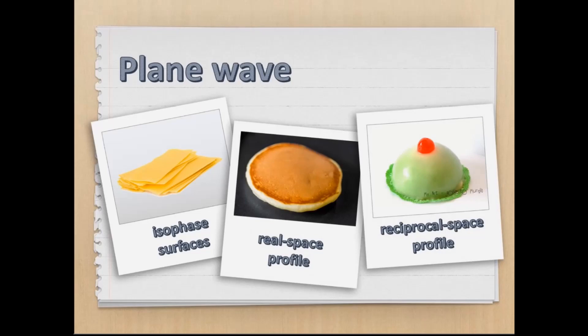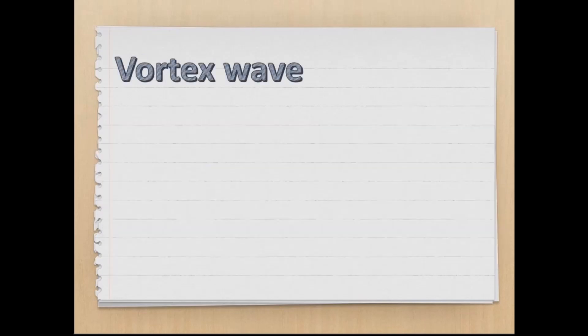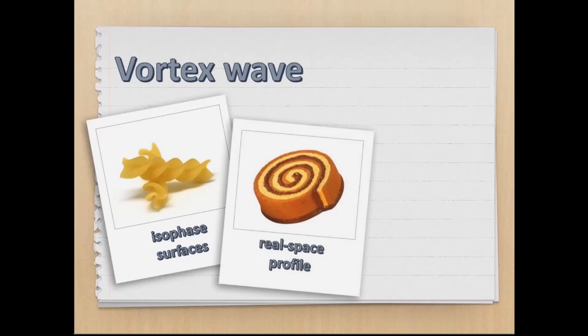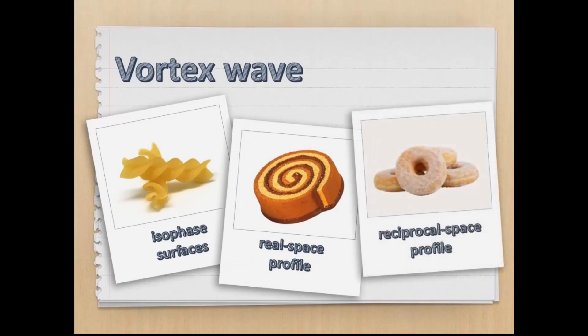If after the interaction with the chiral plasmon the electron wave assumes a vortex structure, then the phase profile should be determined by a helical distribution, which closely resembles the shape of fusilli pasta. In the real space, a vortex wave would show a spiral pattern, similar to a cake roll, while in the reciprocal space, it would appear with a hole in the middle, like a Neapolitan graffe — or basically a donut.